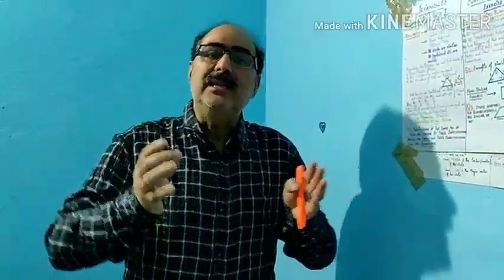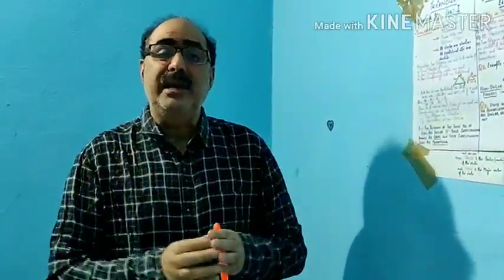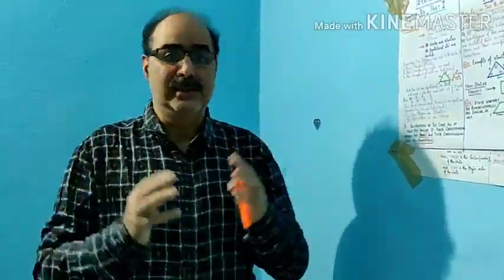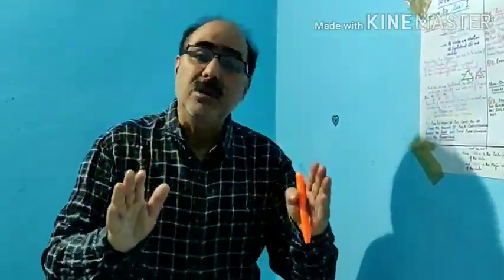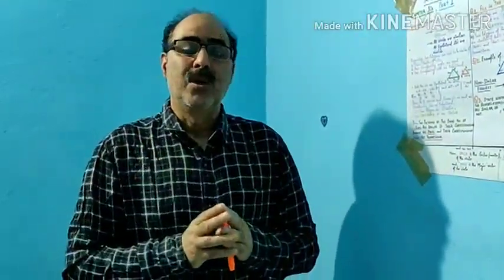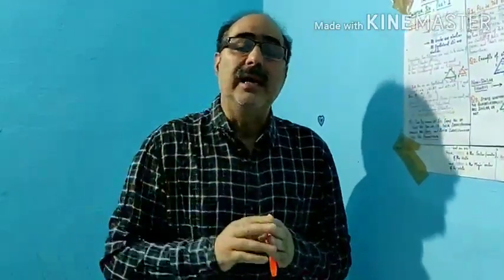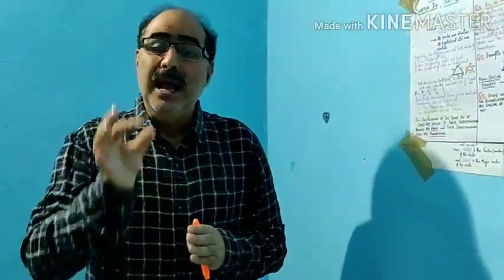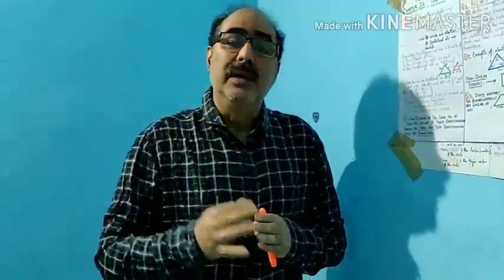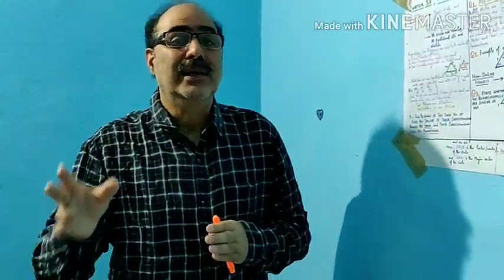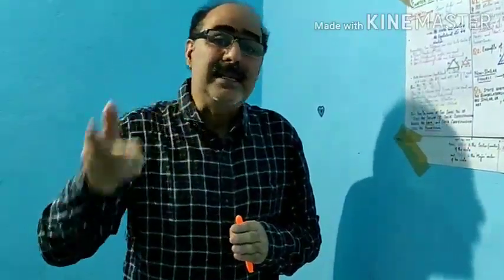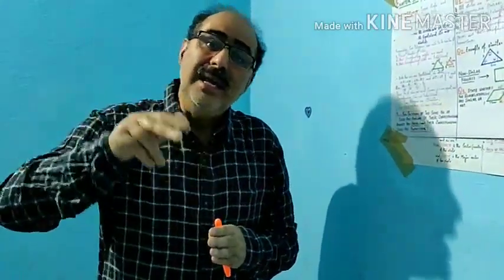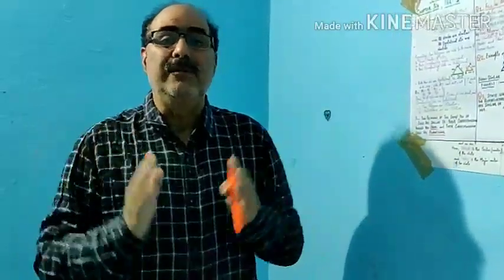फिर आज class 10 के अंदर आपको एक नया concept मिलेगा — similarity, similar triangles. For proving two triangles similar, उसके लिए भी कुछ conditions हैं, कुछ rules हैं। उन rules के नाम इस तरह हैं: SSS similarity rule, SAS similarity rule, AAA similarity rule — side-side-side, side-angle-side, angle-angle-angle. यह तीन similarity rules हैं for proving two triangles similar.